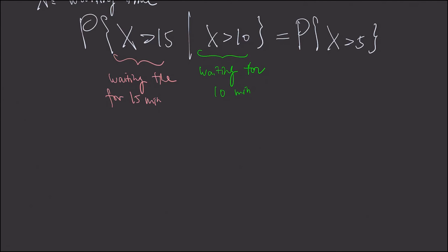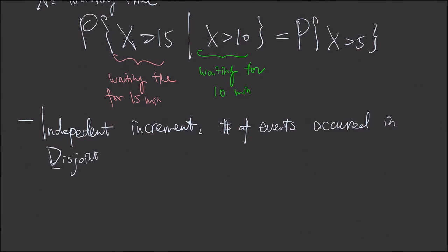And next, we'll learn two new concepts before we formally define this Poisson process. The first one is called independent increment. And we'll see this term multiple times for continuous time stochastic processes. We simply set up on the number of events occurred in disjoint time intervals.